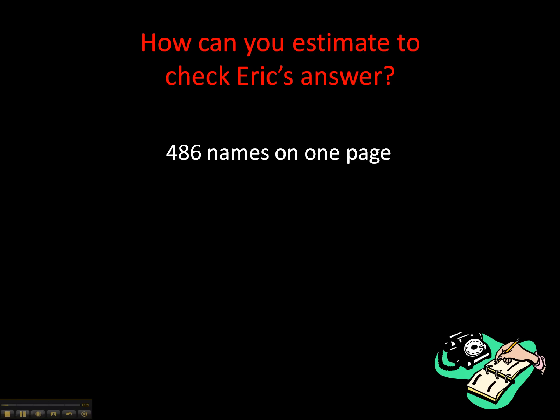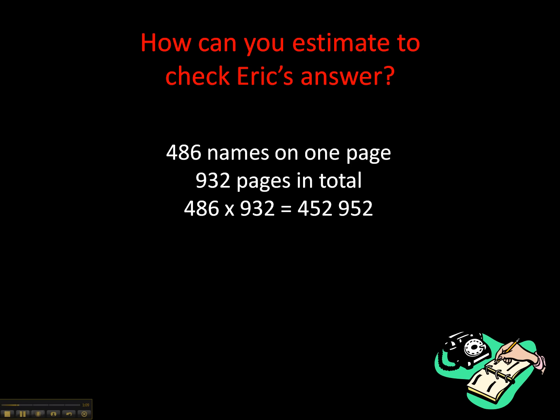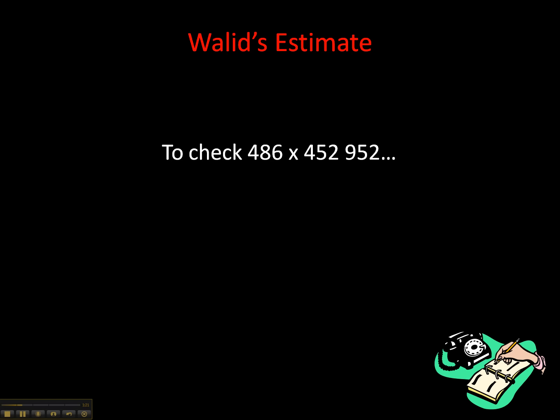How can you estimate to check Eric's answer? Eric has a problem he would like to solve. He's got a Calgary phone book and wants to know the number of people listed in it. He counted all the names on one page — 486 names — as a good estimate for the average number of names on every page. He sees there are 932 pages in total, so he multiplies 486 times 932 on his calculator and gets 452,952. The question is: how can we use estimation to check whether Eric's answer is correct or close to correct?